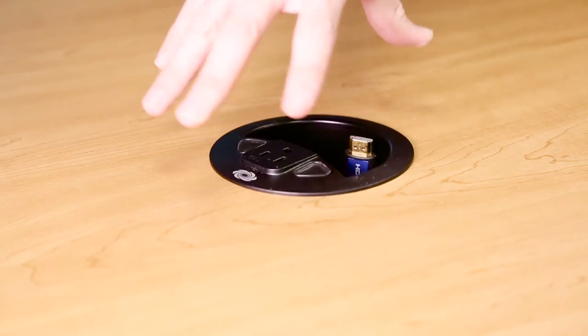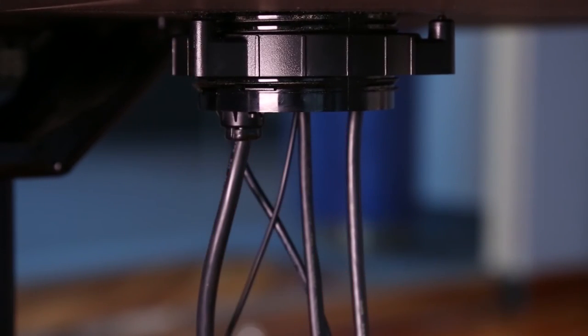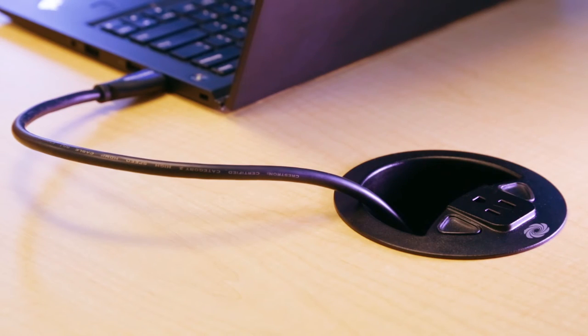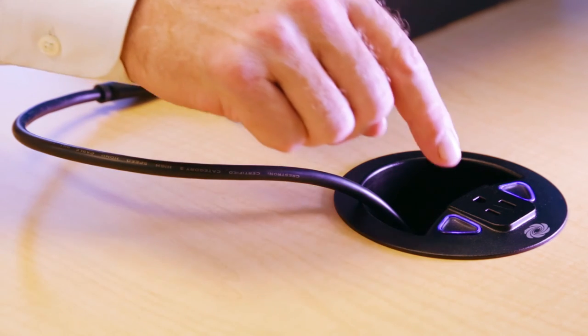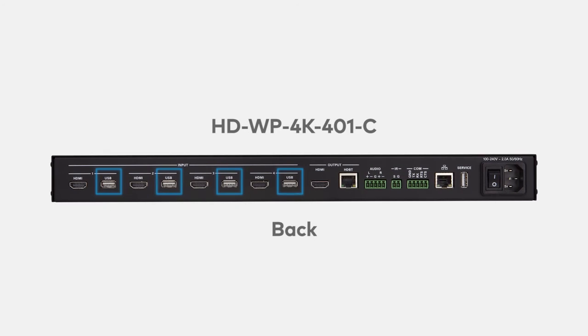Want to add BYOD connectivity and collaboration capability? Install up to four Crestron Connect-It cable caddies around the conference table. Meeting participants simply press the soft-touch button on their cable caddy. Blue LED light frames each button in ready mode, then turns green when active. Four USB ports provide power and communications for each cable caddy.